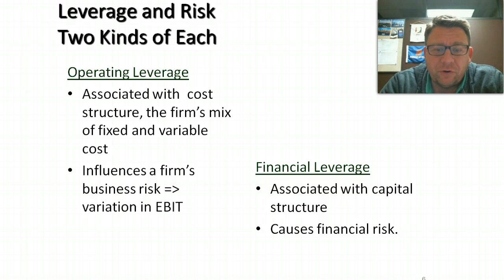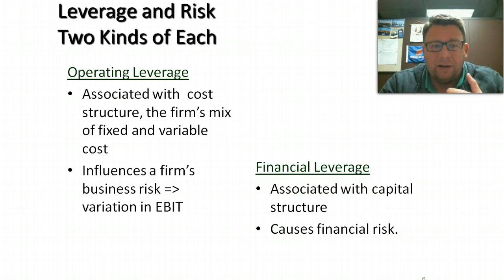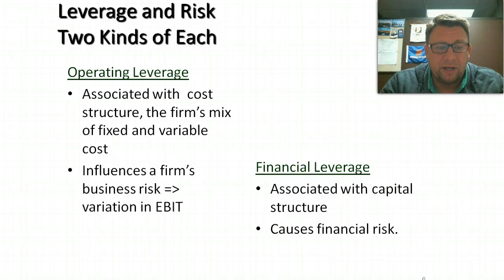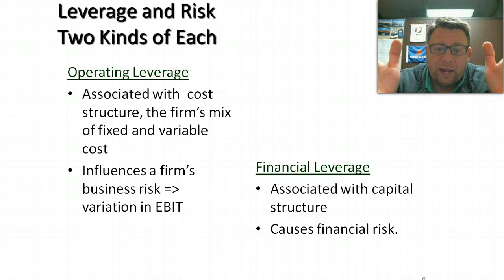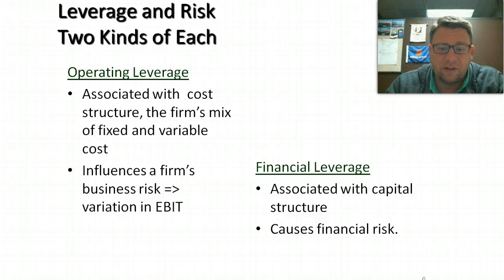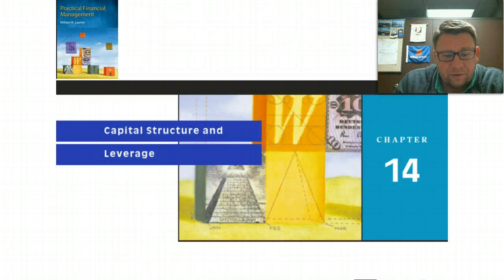We have two kinds of leverage and therefore two types of risk. Operating leverage relates to the firm's cost structure — meaning what kind of variable costs, fixed costs, and mixed costs we have — and it's operating leverage that impacts EBIT. Financial leverage deals with our capital structure. So one is the cost structure, one is the capital structure. Operating leverage causes business risk; financial leverage causes financial risk. That's a brief overview, and next we'll get into financial leverage in the following podcast.